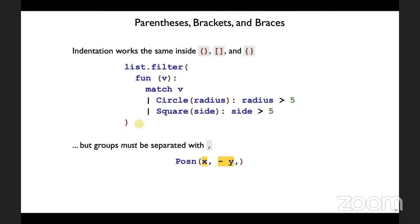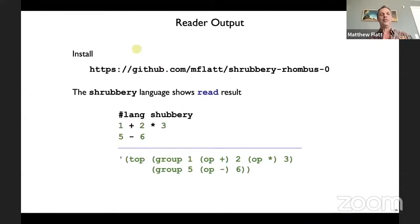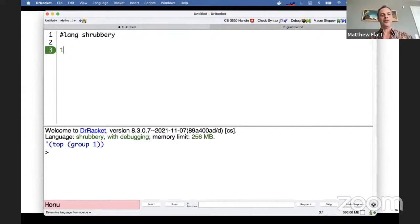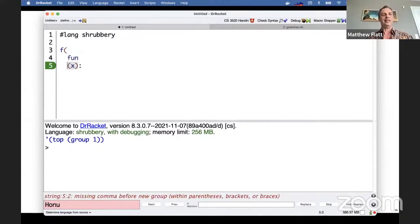Let's try this out — I'm going to switch into DrRacket now. If you want to play around with this later, there's a package — it's not registered on the package server, but you can install it as a package from there. That will give you hash-lang shrubbery in DrRacket. So let's try out this example: map and fun x, x plus one, onto a list 1, 2, 3 — something like this.